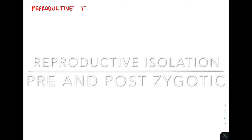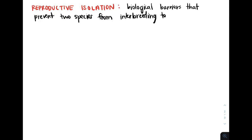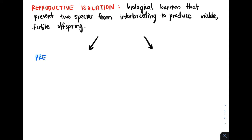Let's talk about reproductive isolation. Reproductive isolation are biological barriers that prevent members of two different species from interbreeding to produce viable and fertile offspring, thus limiting gene flow between species. There are two kinds of reproductive isolation: prezygotic isolation and postzygotic isolation.